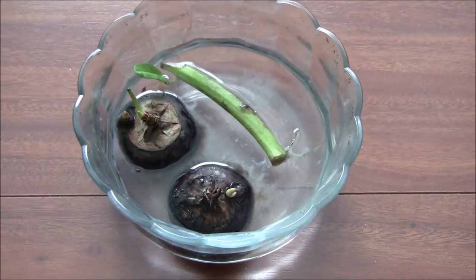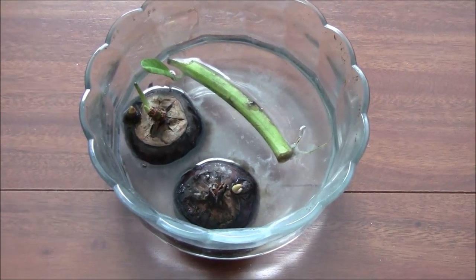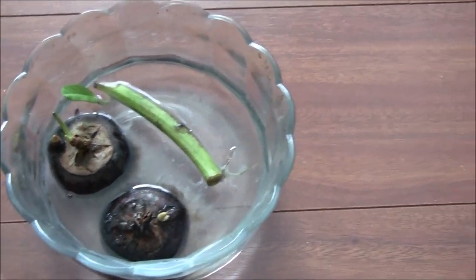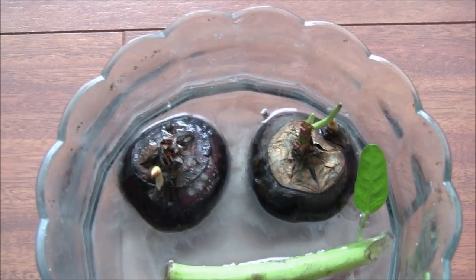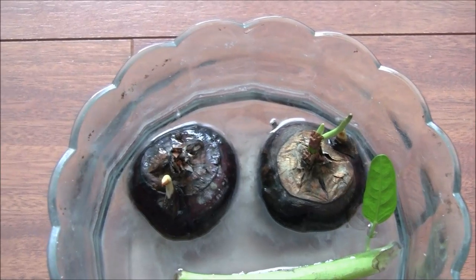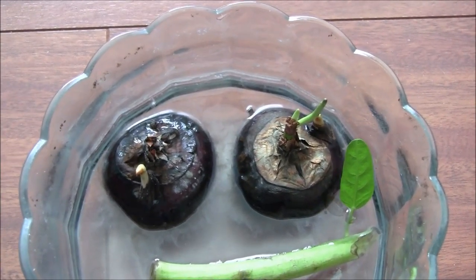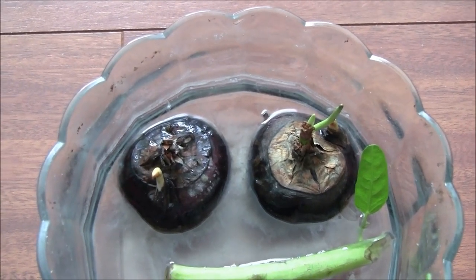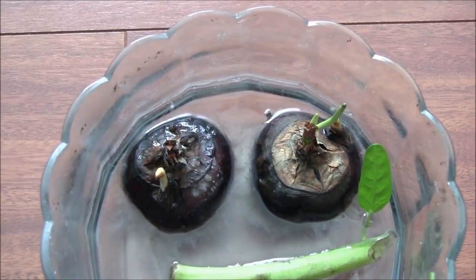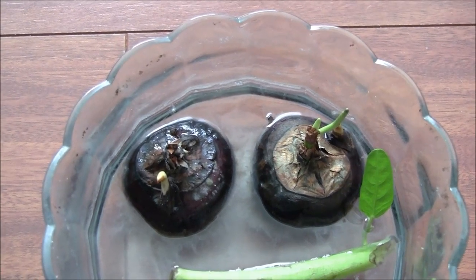You can grow them in ponds or aquariums. Let me introduce these things. They are called Chinese water chestnuts. They don't actually taste like chestnuts. They taste like a pear. If you peel the outer skin, inside it looks and tastes like pear.